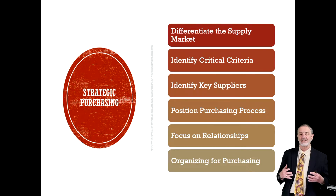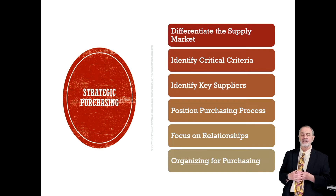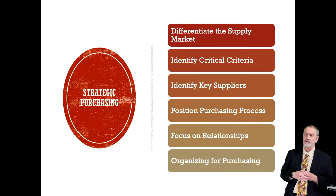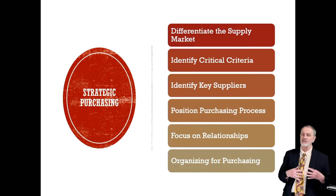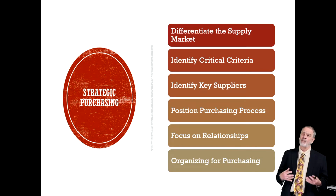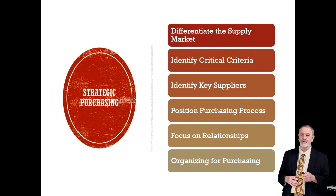Is it speed? Is it cost? Is it innovation? Is it flexibility? Who are the key suppliers — key suppliers in the marketplace, key suppliers for us? Then we position the purchasing process, and that's what I'm going to talk about in a few minutes. There's an important focus on relationships, and we'll certainly explore that in a later podcast. And then how do we organise for purchasing — how do we set up our purchasing department, our purchasing processes, and our disbursement of purchasing authority?